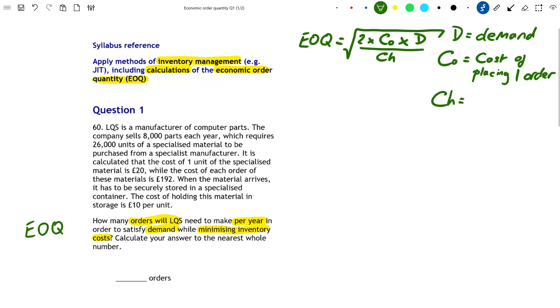CH is the cost of holding one unit. So we have our variables.